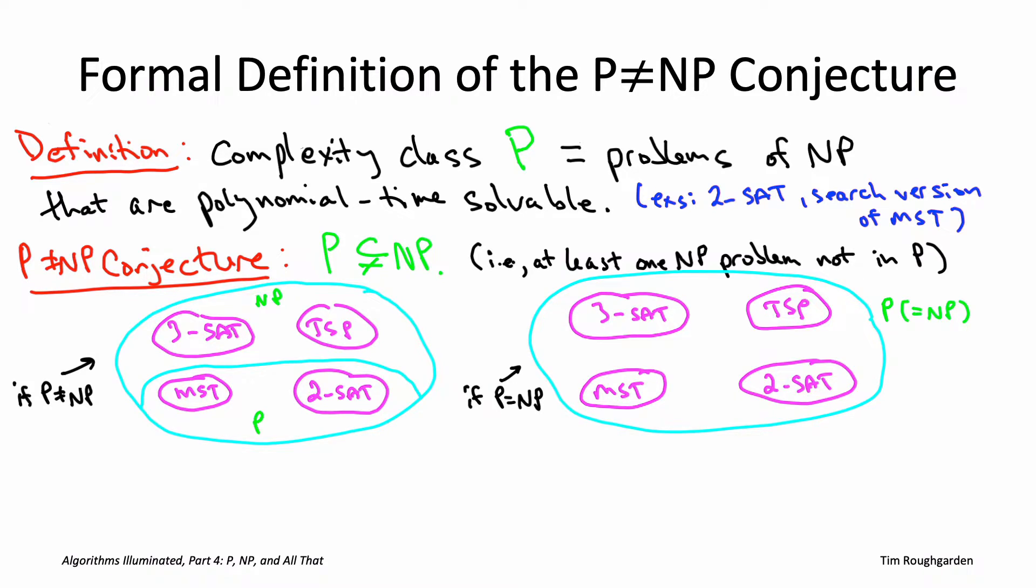Just to be clear, when I write MST and TSP on the slide, I'm referring to the search versions so that it type checks to speak about them being members of NP. On the other hand, if P and NP coincide, where the only prerequisite for polynomial time solvability is to efficiently know a solution when you see one, then we have the case on the right where P and NP become the same thing, with P growing to capture everything in NP.